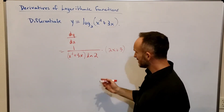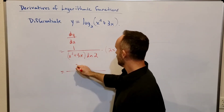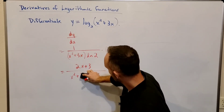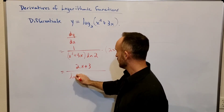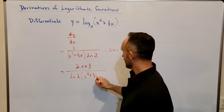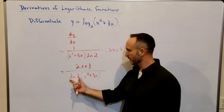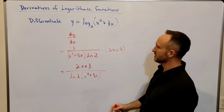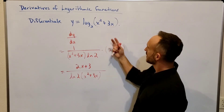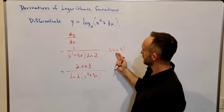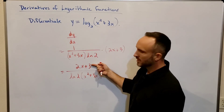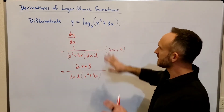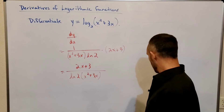So when we multiply, we get 2x plus 3 on the numerator and x squared plus 3x in the denominator. It's more conventional to write this as 1 over the natural log of 2 times x squared plus 3x, out front as a coefficient. You start to notice a pattern: the derivative of the inner function ends up in the numerator, and the rest of the result is in the denominator.